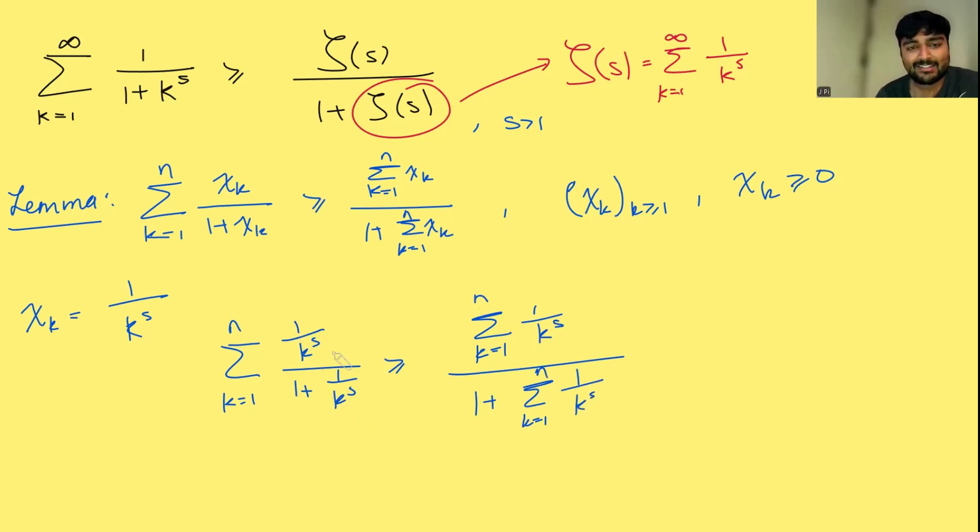Well, this left-hand side here, 1 over k to the s, if I multiply the top and bottom of this fraction by k to the s, this becomes the sum from k equals 1 to n of 1 over 1 plus k to the s, which is what we're interested in. And on the right-hand side, we're just going to keep it the same.